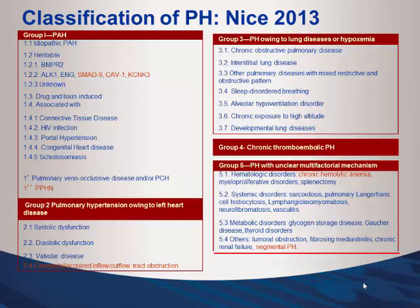Group 1 patients are the ones treated with the fancy medicines. But we often see Groups 2 and 3 in practice. In reality, patients have a little bit of multiple group pathology mixed together — it's always a mixture of disease. We're now seeing a much broader spectrum of conditions, and things are continuing to evolve.